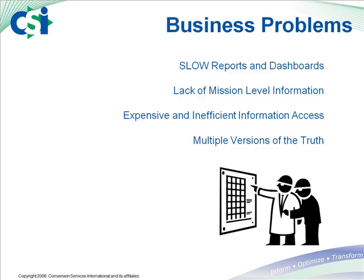So in this presentation, we've covered four common problems that a data warehouse solution seeks to address: slow reports and dashboards, lack of mission-level information, expensive and inefficient information access, and multiple versions of the truth. Now, in our following presentation, we'll outline the steps to solving these problems with a data warehousing solution. To see this presentation, please click on the link.